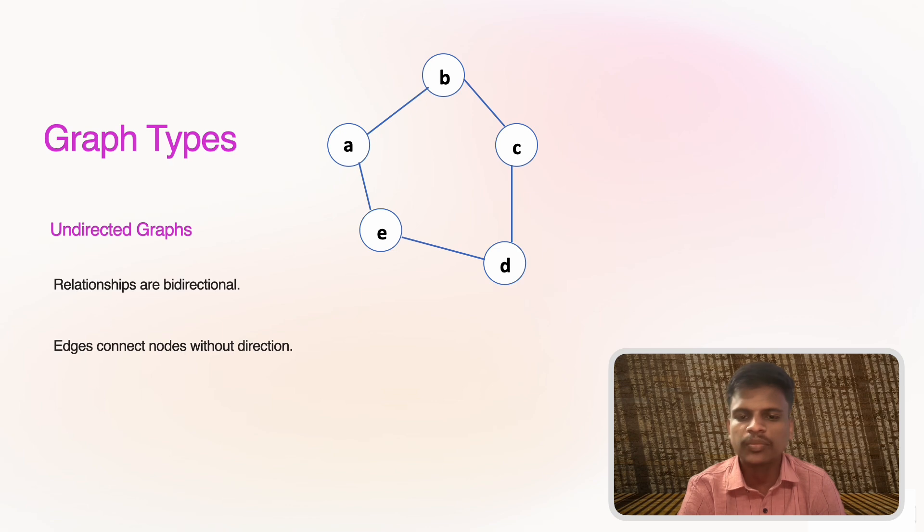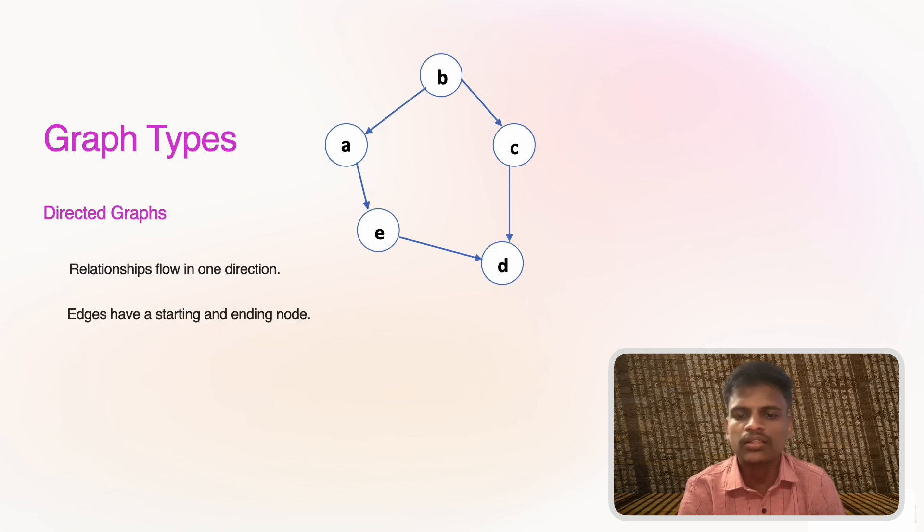Types of graphs: graphs can be classified into several types depending on the properties of edges and connections. First, undirected graphs have edges that don't have a direction, meaning the relationship is bidirectional. A good example would be friendship on social media—if A is friends with B, then B is friends with A as well. Second, directed graphs have edges with a direction. Think of Twitter: if person A follows person B, it doesn't mean that B follows A back, so the relationship flows in only one direction.